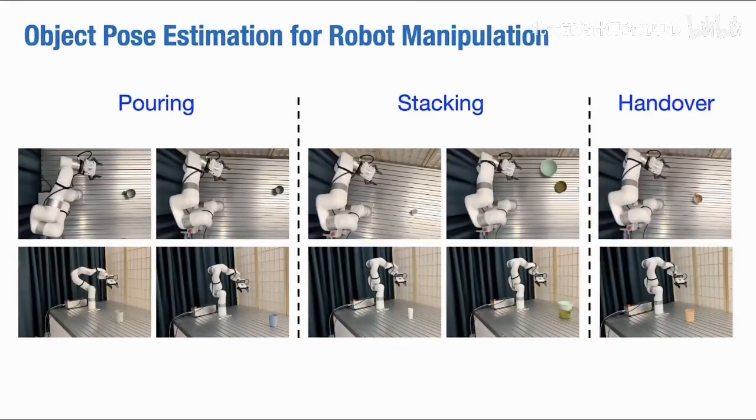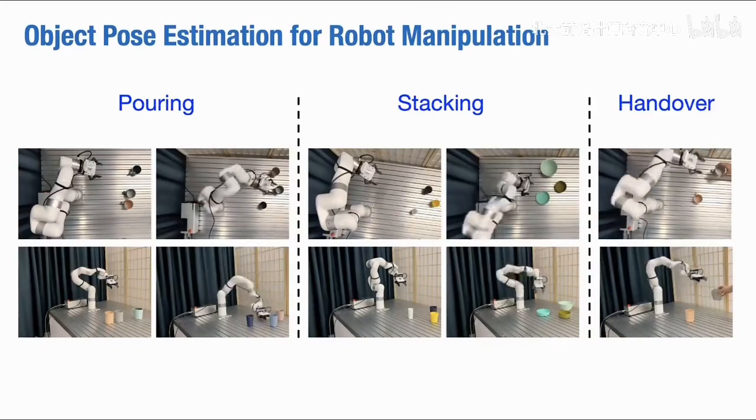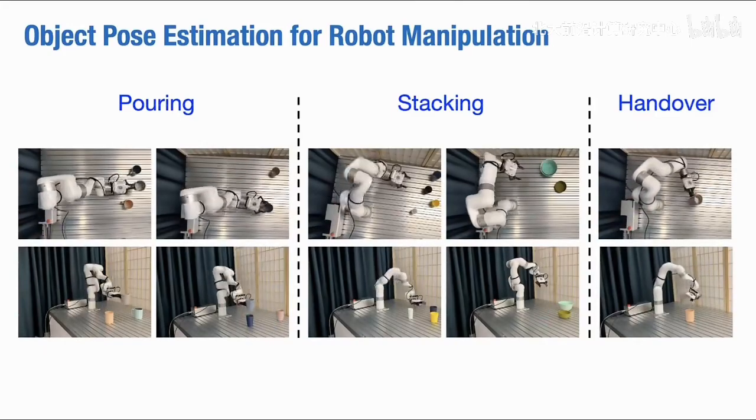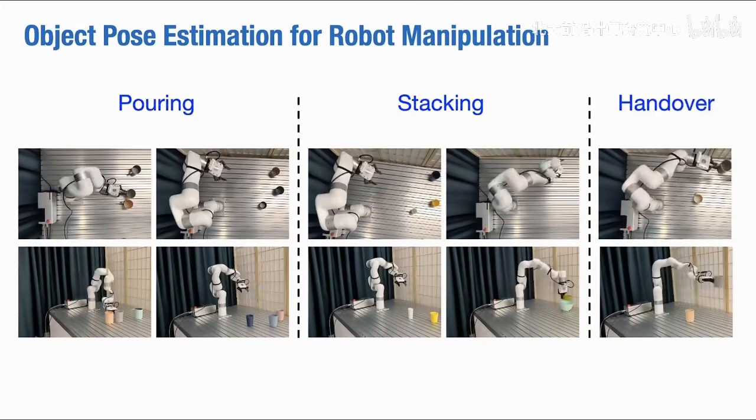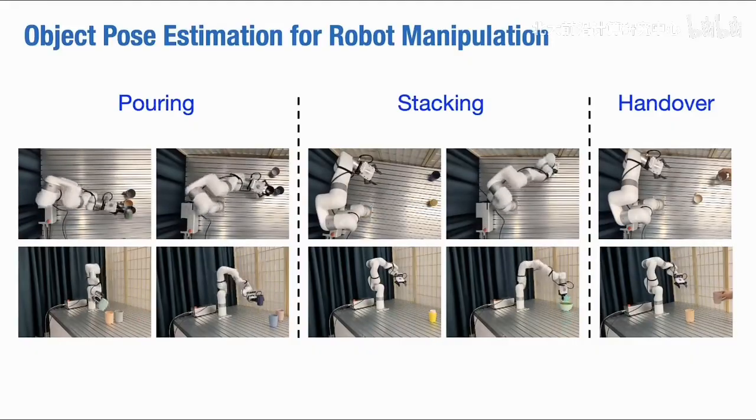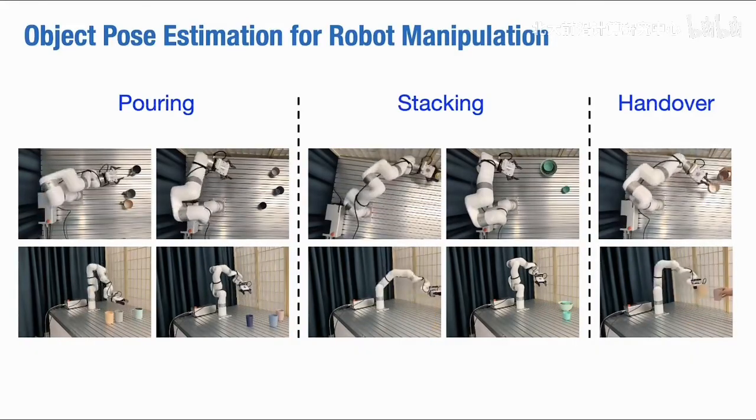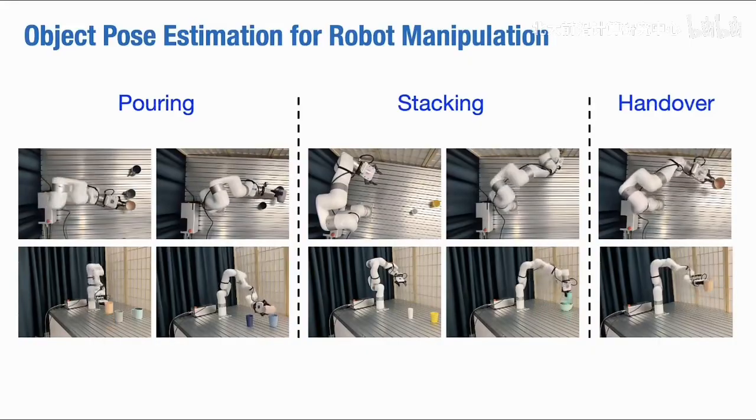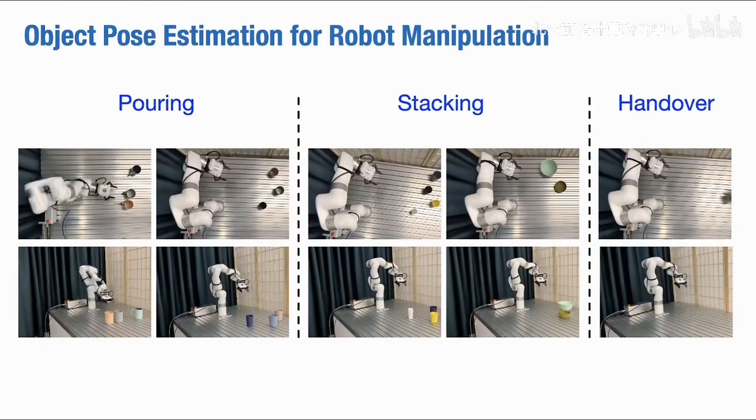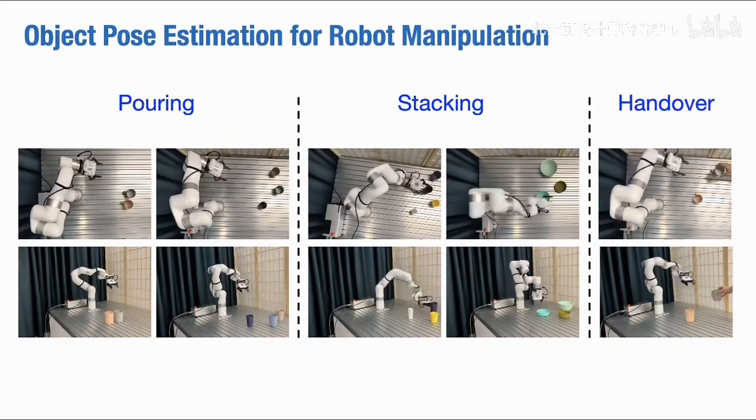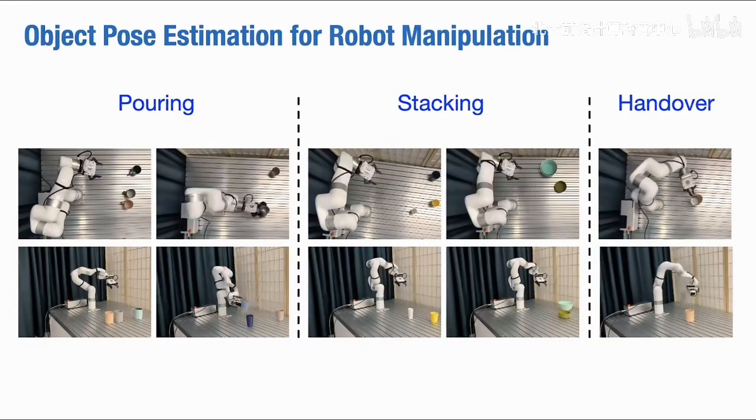We successfully integrated our 6D category level pose estimation framework with various robotic manipulation tasks, such as pouring, stacking and handover. The exceptional performance of our method showcases its tremendous potential in real-world applications involving robotics.